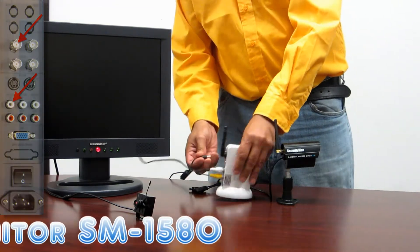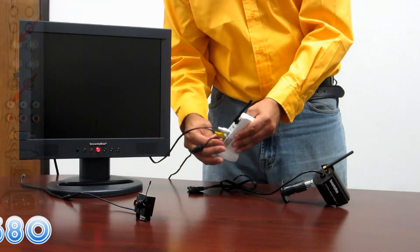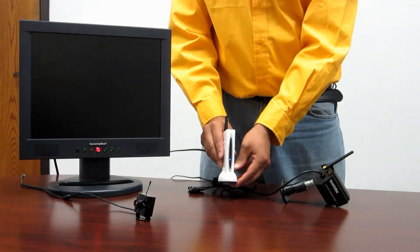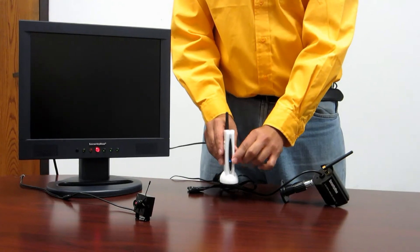Now what you want to do is go ahead and power up your receiver. There is no power switch on the receiver itself, so as soon as you plug in the power you will get a little blue light indicating that it's on.